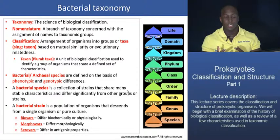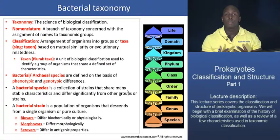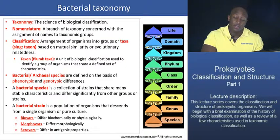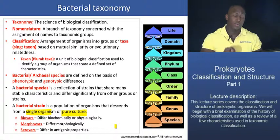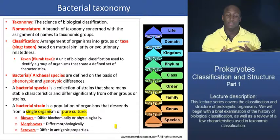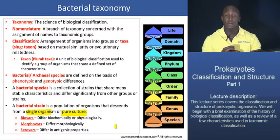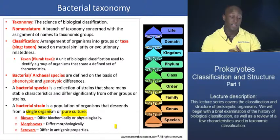We need to distinguish what a bacterial species is from a bacterial strain. A strain is basically a population of organisms that descend from a single organism or a pure culture. When we talk about a species, we mean a group of organisms sharing a significant number of stable characteristics that differentiate them from others. A strain, by contrast, is simply a population of bacteria descendant from a single organism or pure culture.